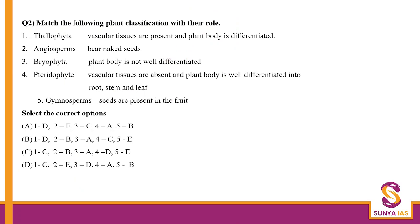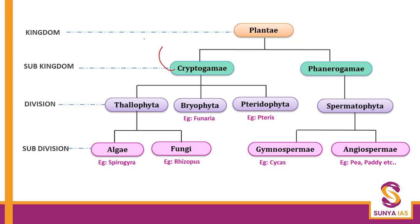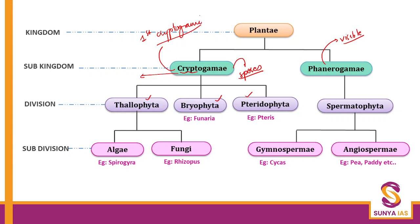Now the next question. You have thallophytes, angiosperms, bryophytes, pteridophytes, and gymnosperms. You can classify these plants into two parts: one is cryptogams and the second is phanerogams. Why is this important? Because India has recently opened up its first cryptogamic garden, which makes this question very important. Cryptogams are thallophytes, bryophytes, and pteridophytes. The name 'crypto' means something hidden — their reproductive organs are hidden. Phanerogams have visible reproductive organs. Cryptogams reproduce through spores, while phanerogams reproduce through seeds.